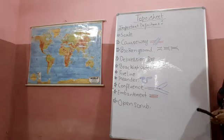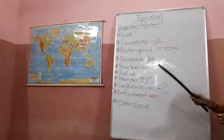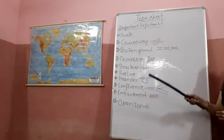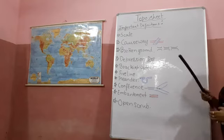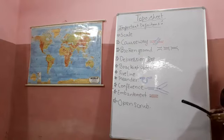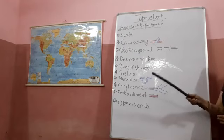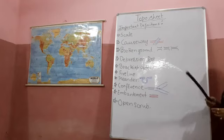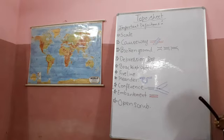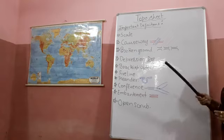Another very important question is: what is Representative Fraction or RF? You will write: this is the ratio between the distance on the map and the corresponding distance on the actual ground. For example, 1:50,000 means that one centimeter on the map is equal to 50,000 centimeters on the ground. I hope it is clear to all of you.